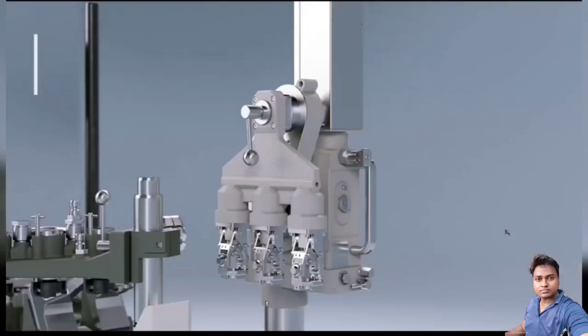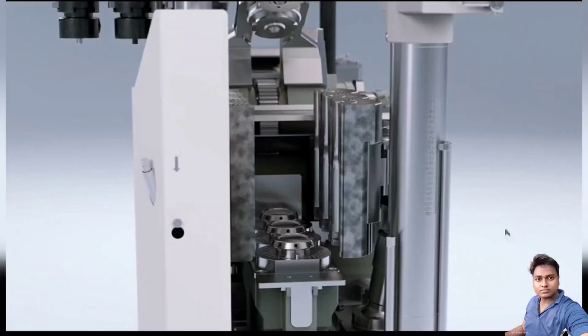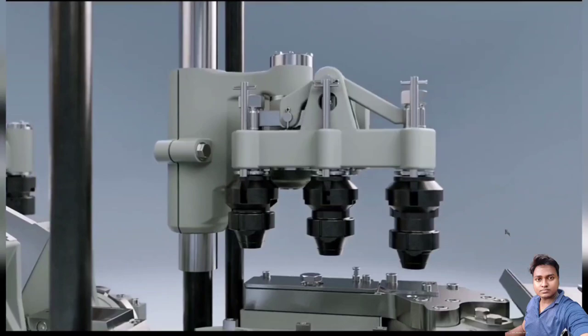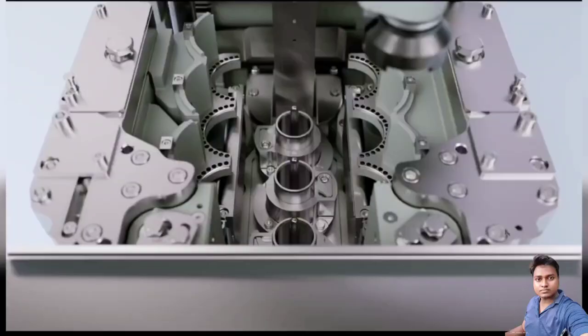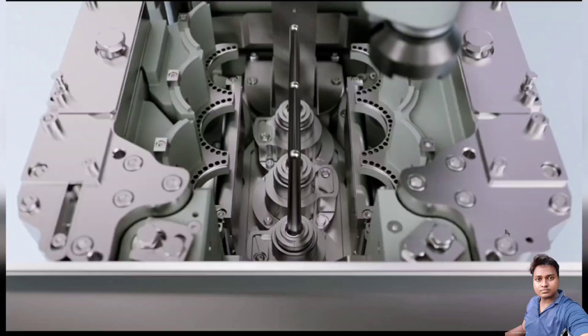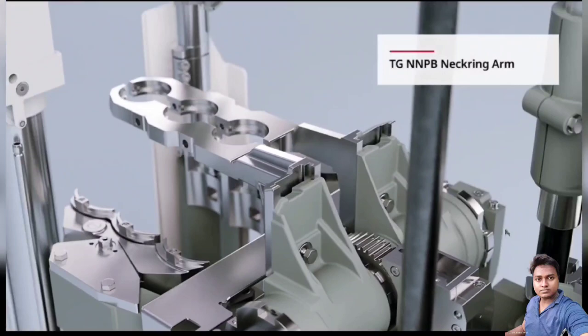TG quarter NNPB to DG one fourth six one fourth blow and blow process. TG NNPB takeout tongue head. TG NNPB blue head arm.